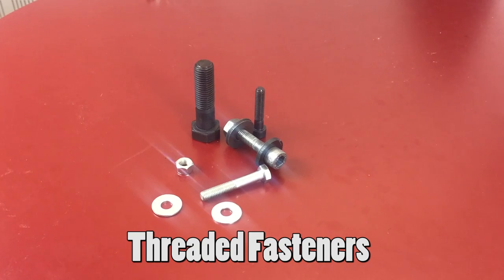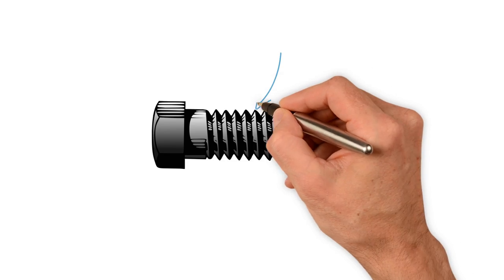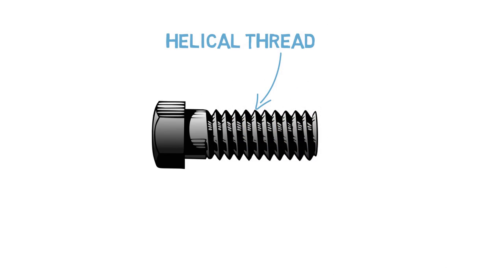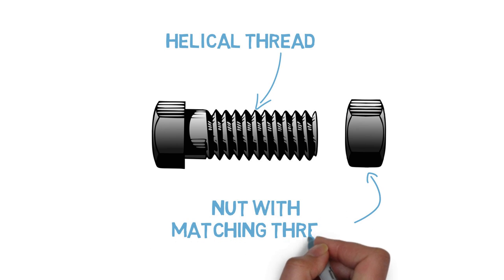The types of fasteners we use in engineering structures are broadly characterized by how they are installed. The first category is a threaded fastener, which uses a helical structure known as a thread to screw into a material or to interlock with a matching thread, such as in a nut. These types of fasteners have the advantage that they can be removed and reinstalled. However, as we will see later, this can sometimes also be a disadvantage.